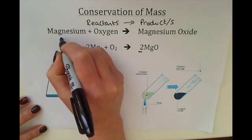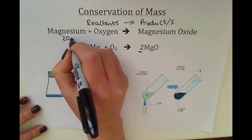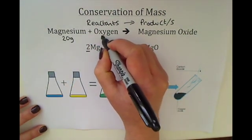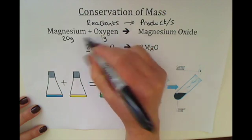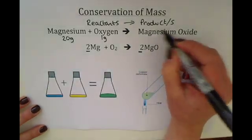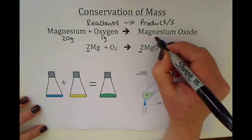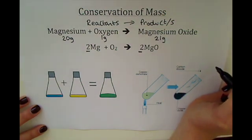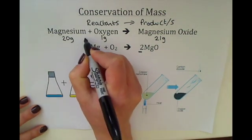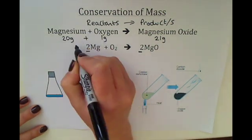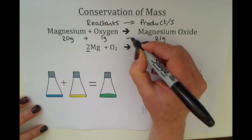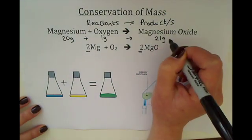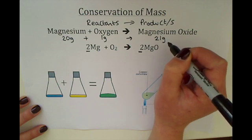For example, if we had 20 grams of magnesium reacting with 1 gram of oxygen, we must have made 21 grams of magnesium oxide in total — simple maths whereby the masses on the left hand side must equal the mass of the product or products on the right hand side.